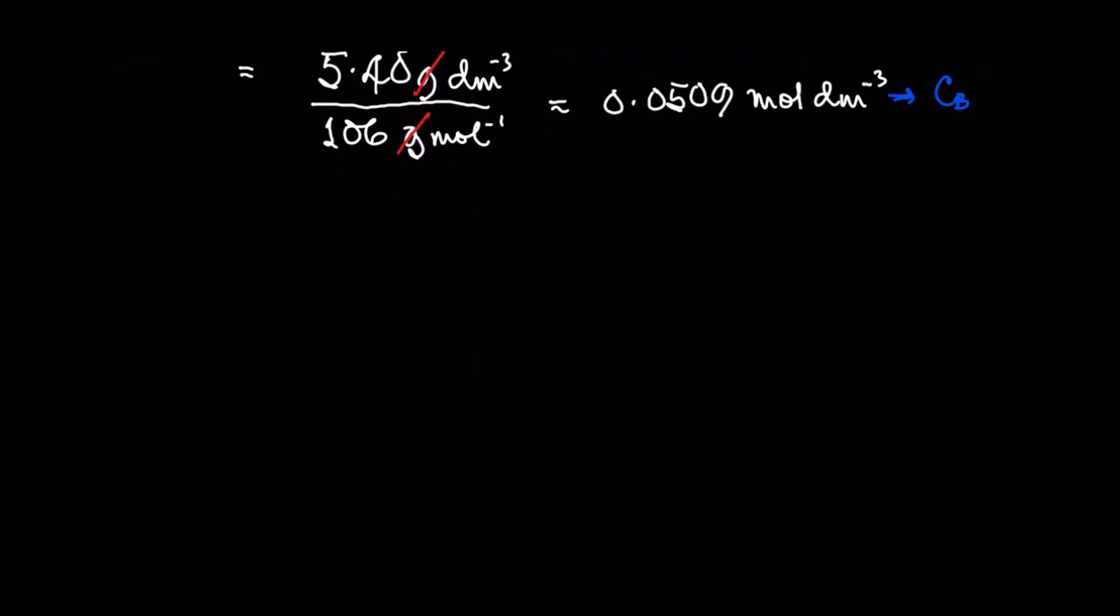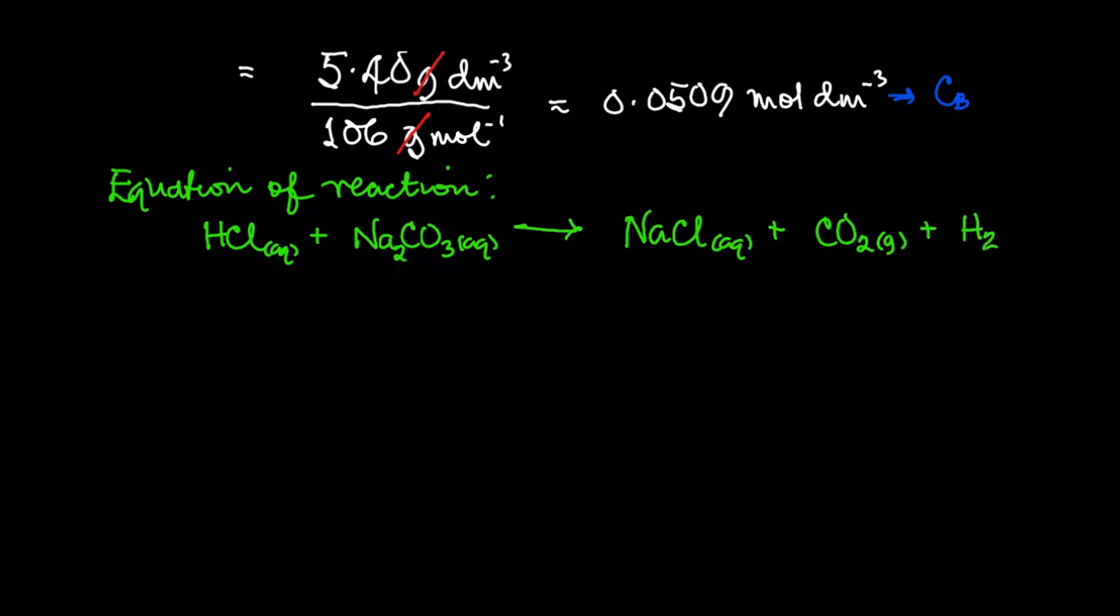So to calculate the titre, we'll first have to write the equation of the reaction. It's HCl plus Na2CO3 giving us—this is the reaction between an acid and a carbonate—so that will give us a salt which is NaCl, plus carbon dioxide CO2, and plus H2O liquid. So if we balance this, you add 2 here: 2HCl, chlorine will have to be 2, hydrogen is 2.